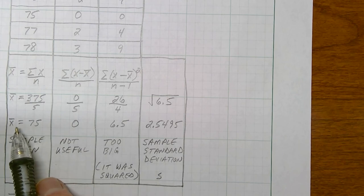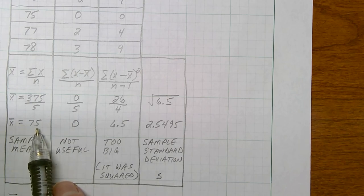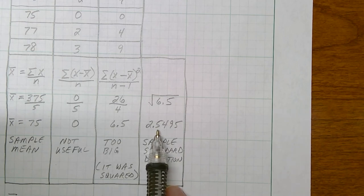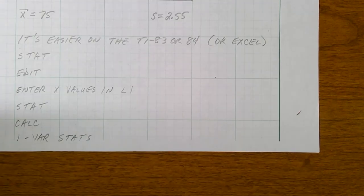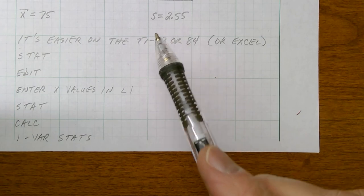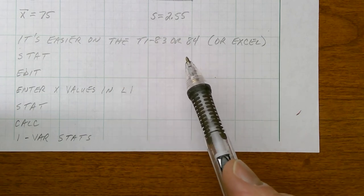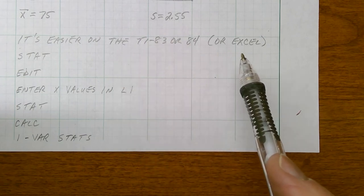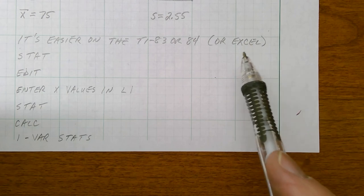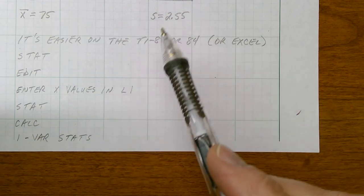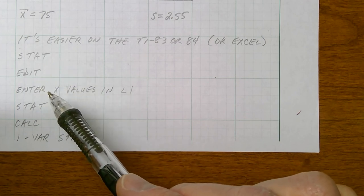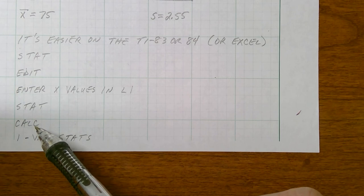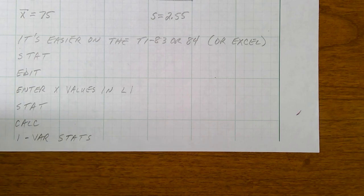On this basketball team, the average height is 75 inches, give or take 2.5 inches — that's my sample standard deviation. Luckily, there's a quicker way using the graphing calculator, or Excel. On the graphing calculator, press stat, edit, enter your values in list one, then stat, calculate, and one variable statistics.